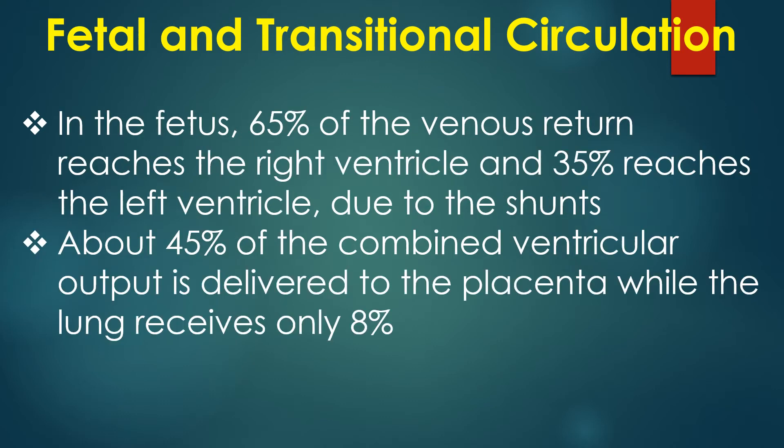In the fetus, 65 percent of venous return reaches the right ventricle and 35 percent reaches the left ventricle due to the shunts. About 45 percent of the combined ventricular output is delivered to the placenta, while the lungs receive only 8 percent.